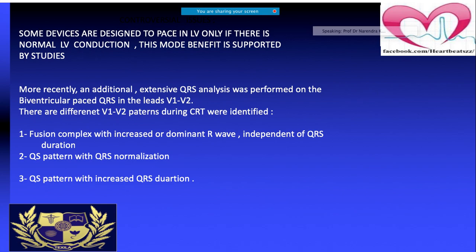Some devices are designated to pace mostly in the LV only. There are newer concepts being tried, and they are showing newer ECG patterns especially in V1 and V2 — such as fusion complex with increased or dominant R wave independent of QRS duration, QRS normalization, and QRS pattern with increased QRS duration. These are important and beneficial parameters.